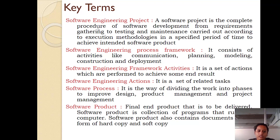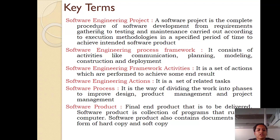So that is about the process framework. The third key term is software engineering framework activities. The process framework activities like communication, planning, etc., are further broken down into smaller steps, and these smaller steps are called software engineering actions, which are performed to achieve some end result. Software engineering actions are a set of related tasks.